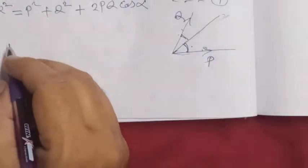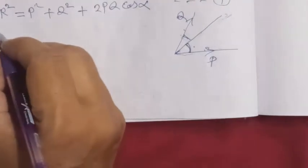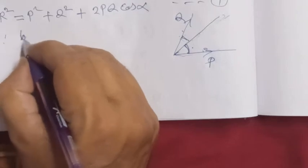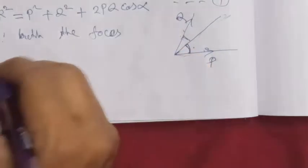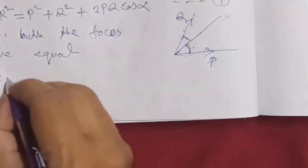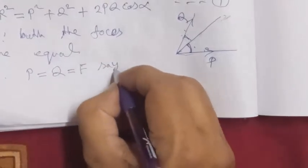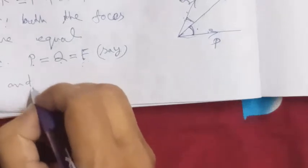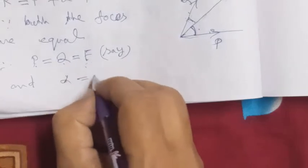In the first case forces are inclined at angle 2 theta, and in the second case at angle 2 phi. Since in the question both forces are equal, we can take P equal to F and Q equal to F. The angle between the equal forces in the first case is alpha equal to 2 theta.